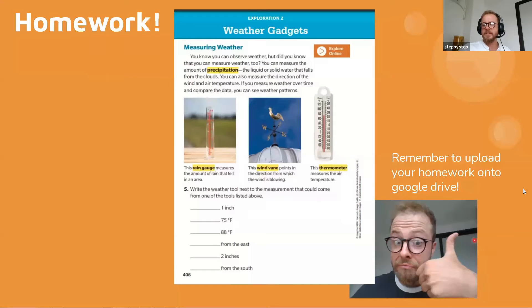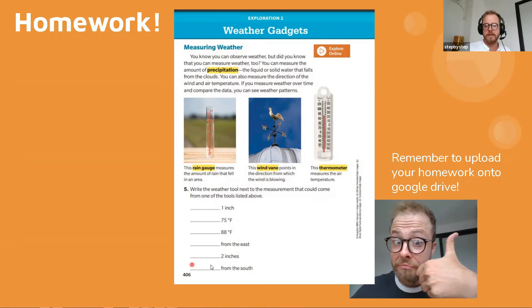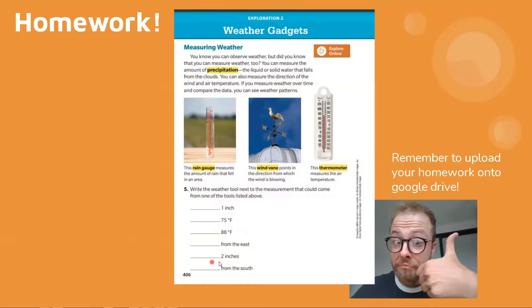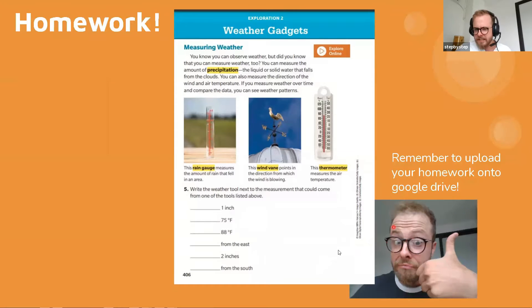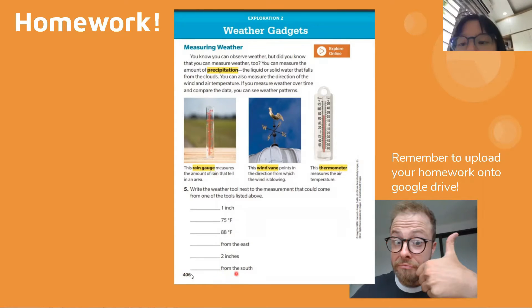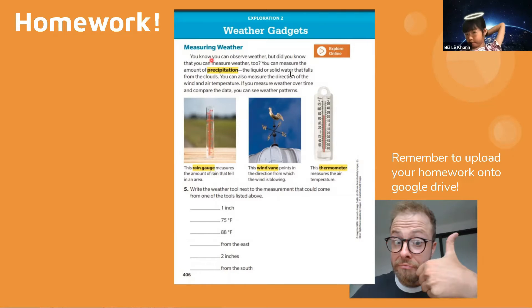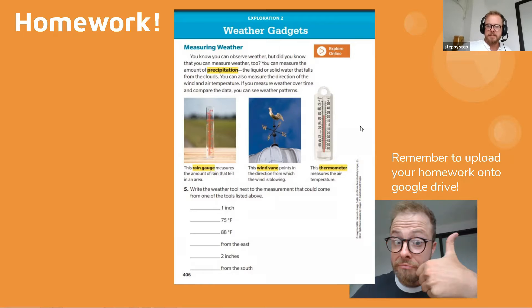And Minha, where are you? I cannot see you. I'm here. What can I put here, Minha? It's a rain gauge. Yeah, rain gauge. Nice. Very good. And then, who can I see there? Is that Cindy? Cindy, what can I put for the last one? The last one is wind vane. Wind vane. Amazing. Very good.